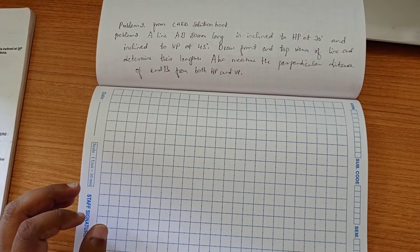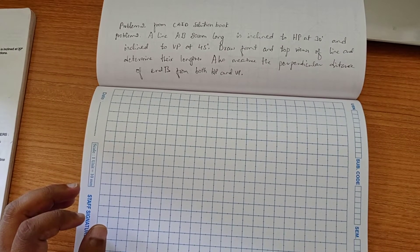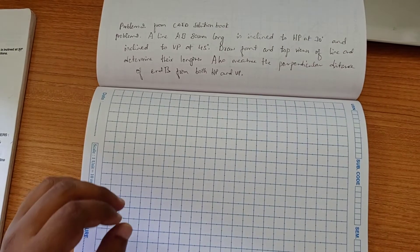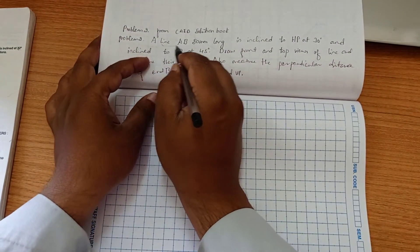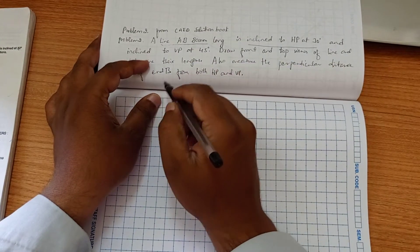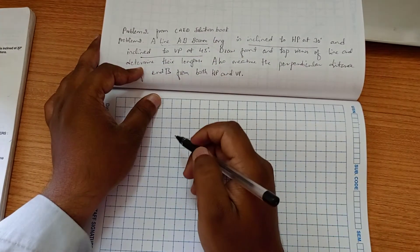We are going to solve the second problem from the CAD solution book in the projection of lines. In this problem, line AB, 80mm long, is inclined at 30 degrees to HP and inclined to VP at 45 degrees.